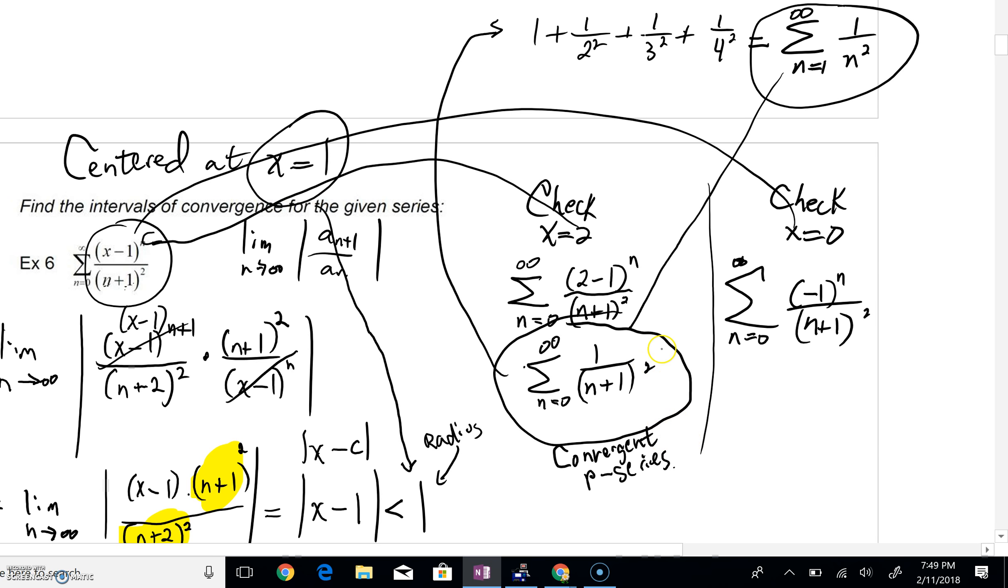Now why are we checking the positive term first? Because now we can come over here and say this converges in absolute value. In other words, it converges absolutely from the x equals zero case.